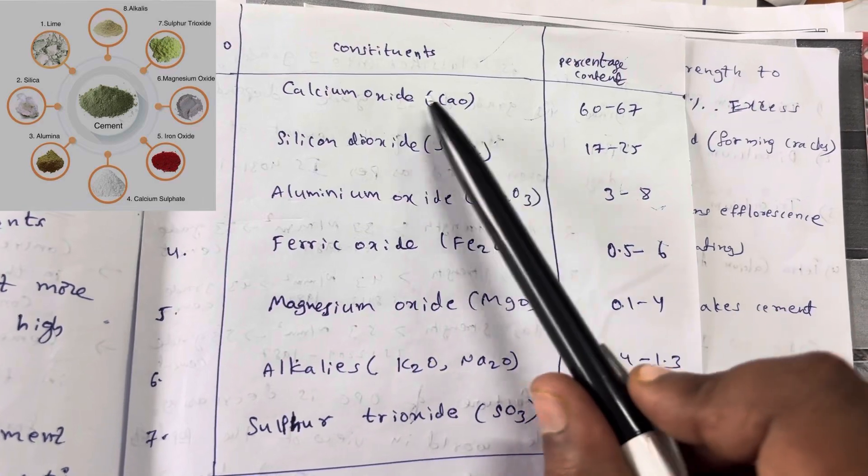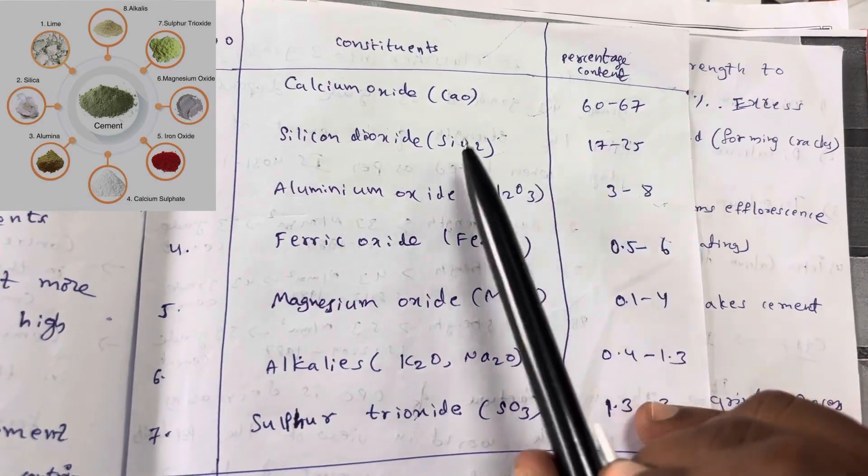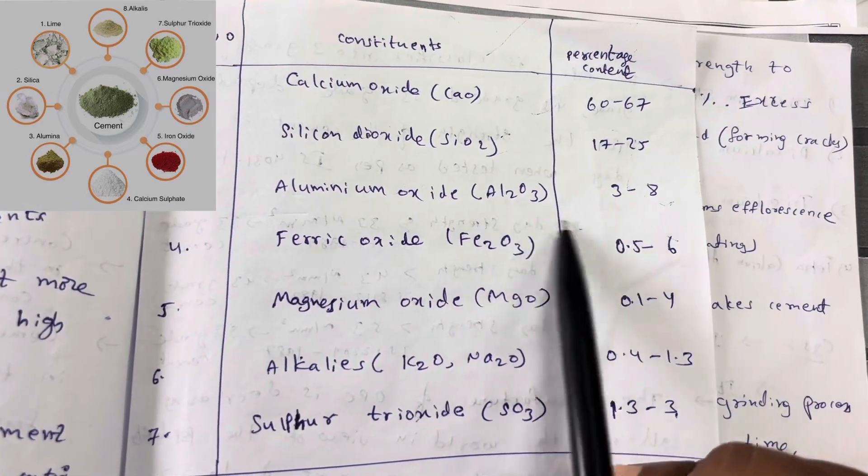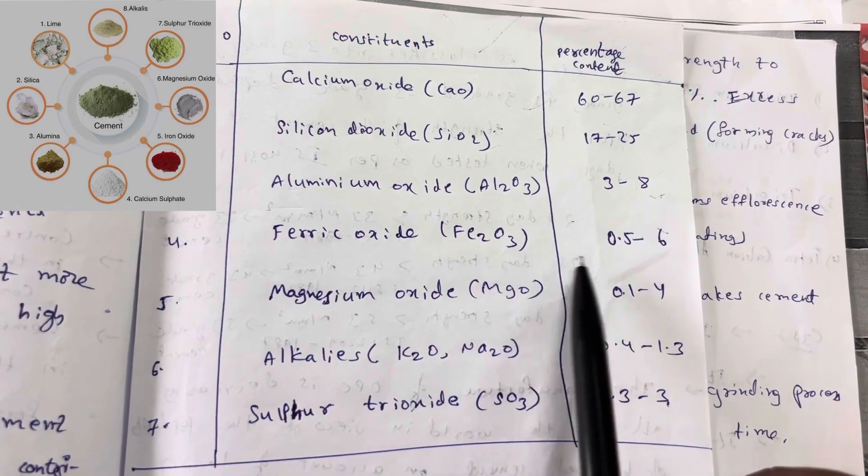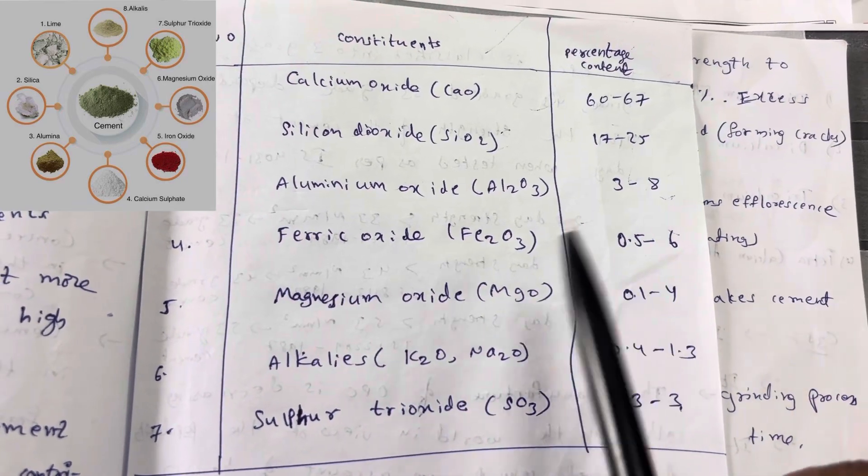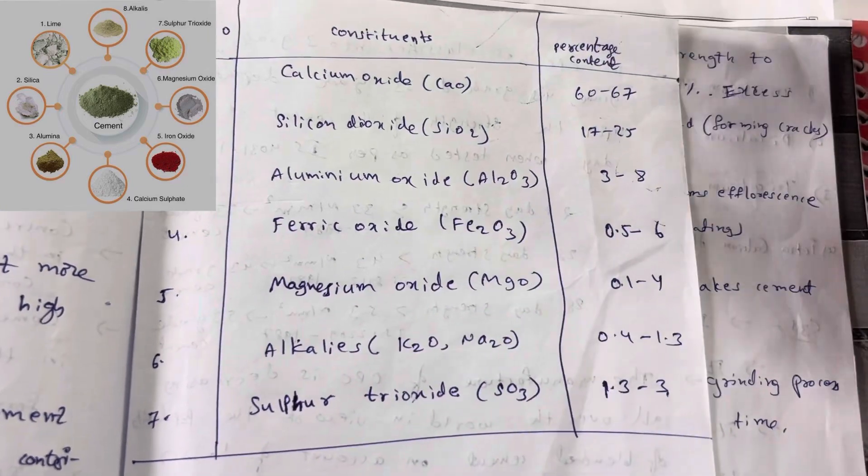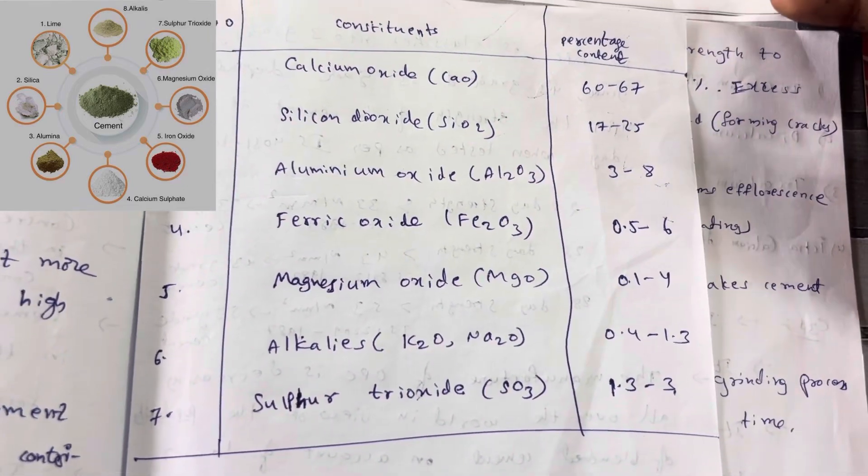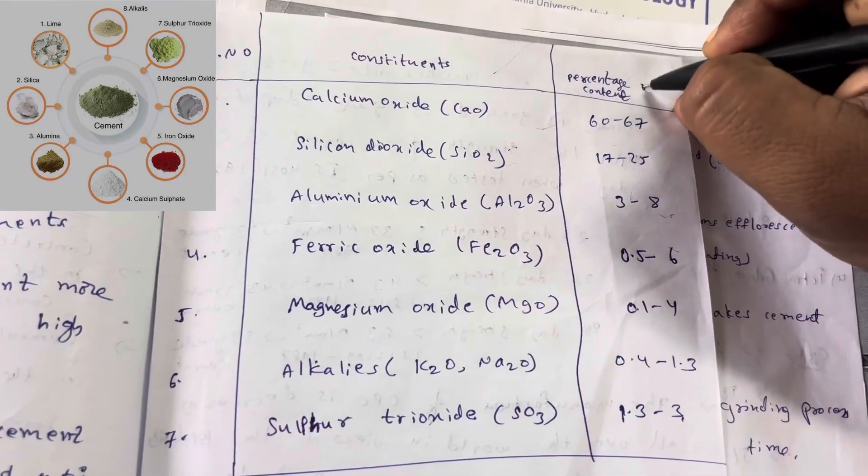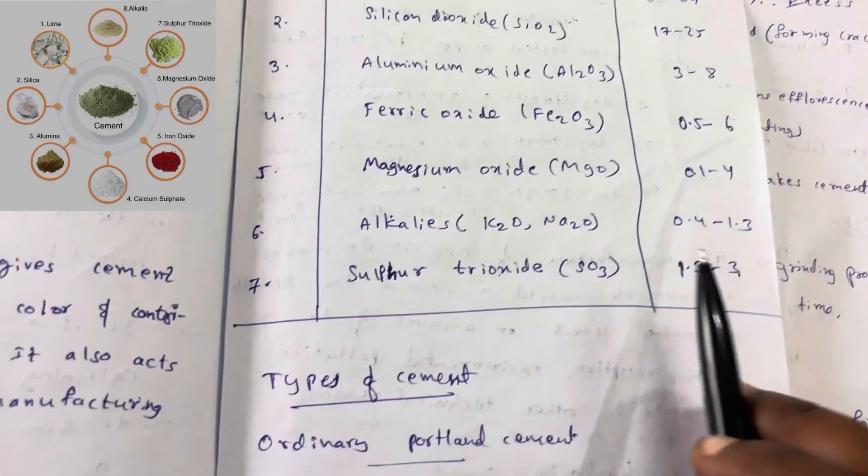The percentages are as follows: calcium oxide is the major constituent at 60-67%, SiO2 is 17-25%, Al2O3 is 3-8%, Fe2O3 is 0.5-6%, MgO is 0.1-4%, K2O is 0.4-1.3%, and SO3 is 1.3-3%.